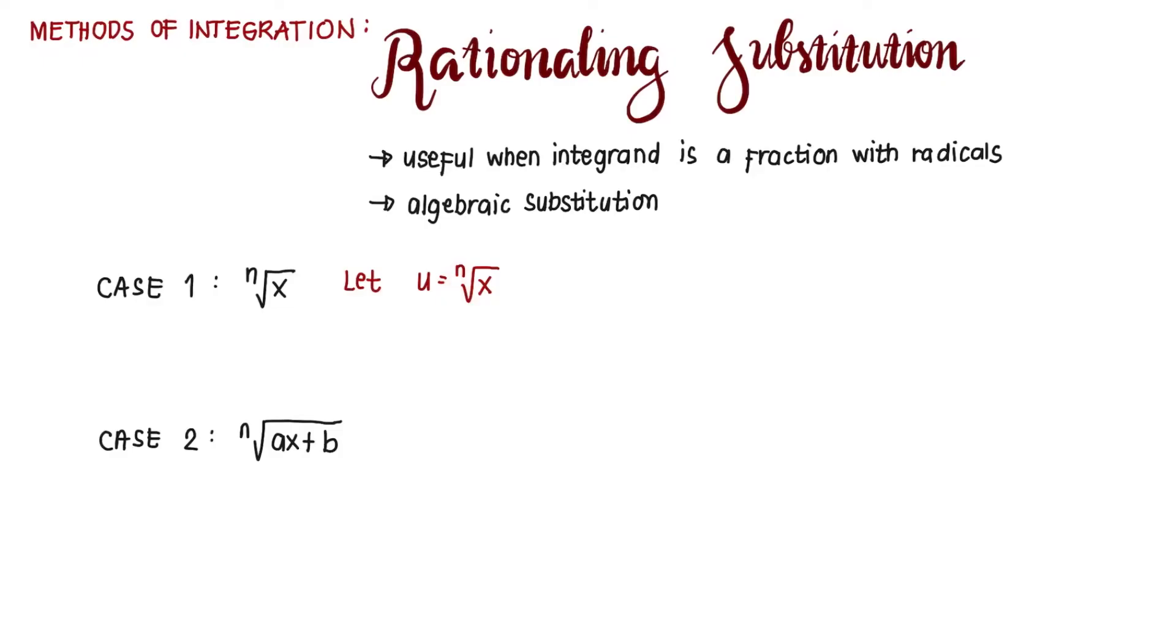Also for case two, we let u equal nth root of ax plus b. Now take note that for this radical form, that is just like raising x to a fractional exponent 1 over n. Same here for case number two. This is just like raising ax plus b to the power of 1 over n.